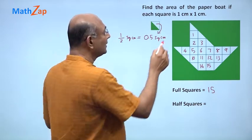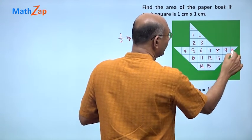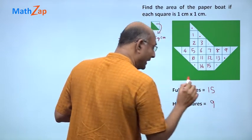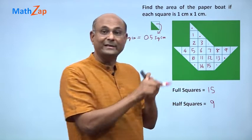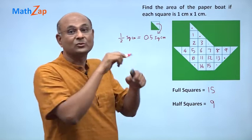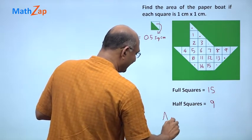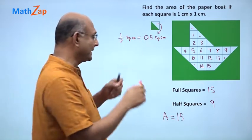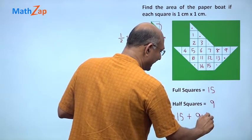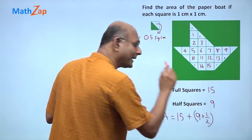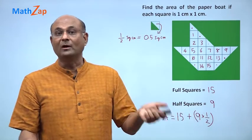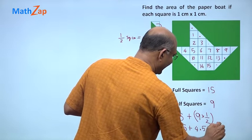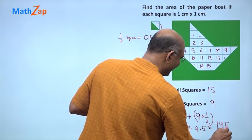Now I can count the number of half squares: 1, 2, 3, 4, 5, 6, 7, 8, 9 — so I have 9 half squares. Each half square has half a square centimeter, so the area is 15 full squares = 15 square centimeters, plus 9 half squares = 9 × ½ = 4.5. Therefore the total area is 15 + 4.5 = 19.5 square centimeters.